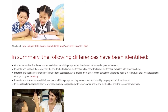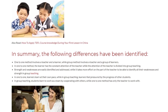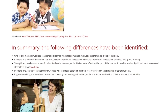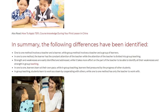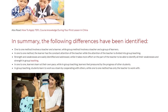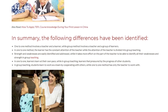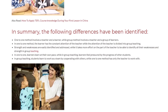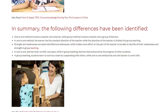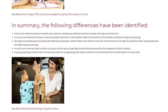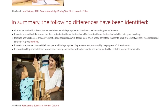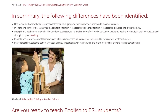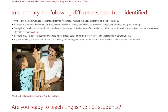Strengths and weaknesses are easily identified and addressed in one-to-one teaching, while it takes more effort in group teaching. In one-to-one, learners learn at their own pace, while in group teaching learners feel pressured by the progress of others. In group teaching, students learn to work as a team by cooperating with others, while in one-to-one the learner has only the teacher to work with.